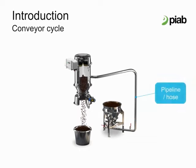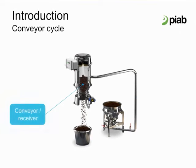Attached to the suction point is our transfer line. The transfer line is usually either PVC flex hose or some type of hard pipe — stainless steel, carbon steel, or aluminum. Attached to our transfer line is then the vacuum receiver. The product enters the conveyor via a tangential inlet, which initiates the process of separating the material from the vacuum flow.